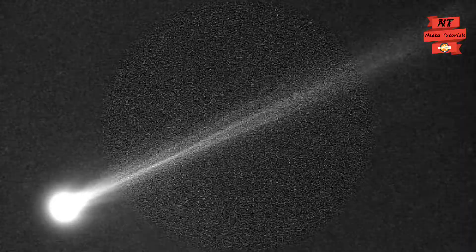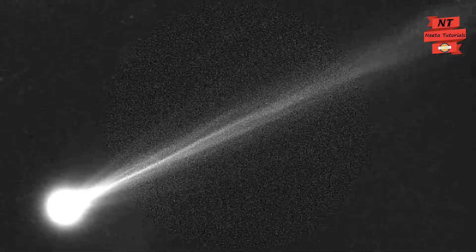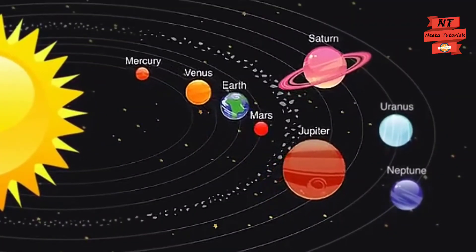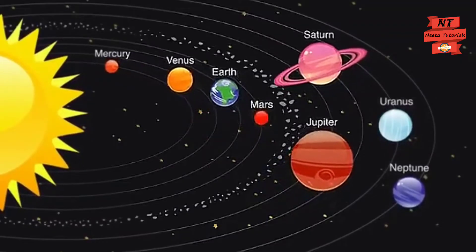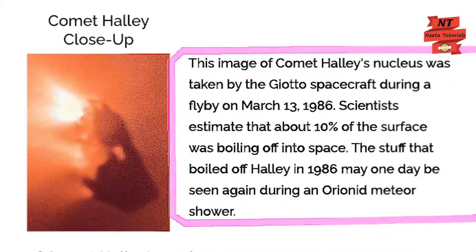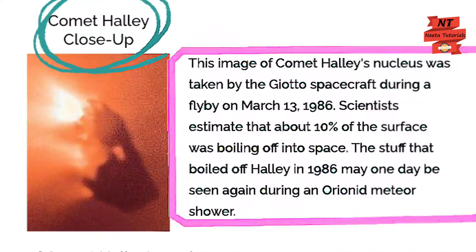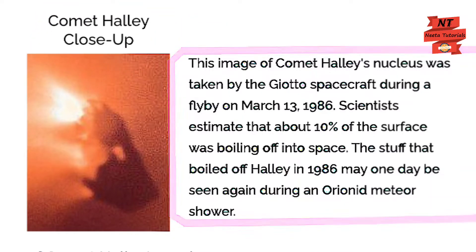Comets ko Hindi mein Dhoomketu kehte hain. Apart from our eight planets, comets also orbit the Sun very rapidly. Children, do you know the most famous comet? That's Halley's Comet. Halley's Comet will be visible in 2061. If you are lucky enough, you will certainly get to see Halley's Comet once in your lifetime, so do not miss the opportunity.